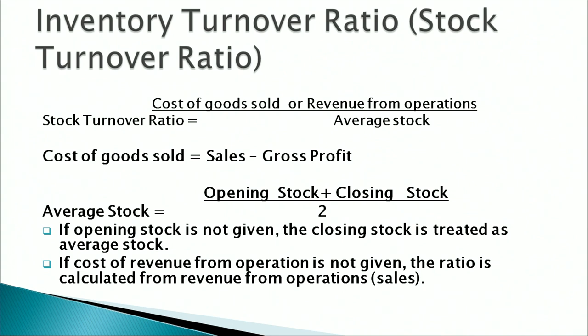Cost of goods sold can also be calculated by deducting gross profit from sales. If no opening stock is given, students please be careful — just take the closing stock as average stock. If cost of revenue from operations is not given, do not worry — take the revenue from operations as the numerator.